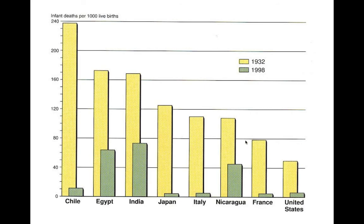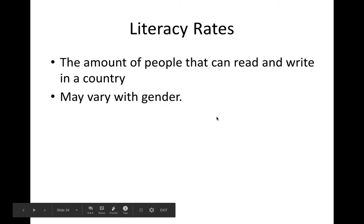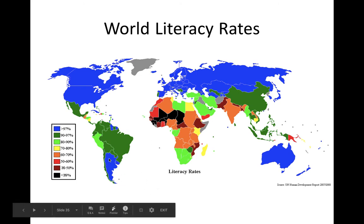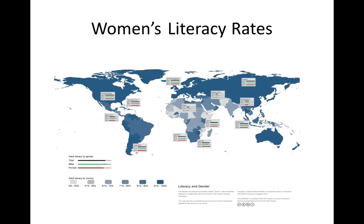The infant death rate is measured per 1,000 live births. Comparing 1932 data in yellow to 1998 data in green, you can really see a dramatic drop thanks to modern medicine. Literacy rates measure the percentage of people who can read and write, and may vary by gender. Western Europe, Russia, the United States, Australia, and Argentina show high literacy rates. Women's literacy rates tell a different story — the same countries with high overall literacy also tend to educate their women. That's the end of the presentation; please look at your assignments on demography websites and Gapminder, due by end of the week.